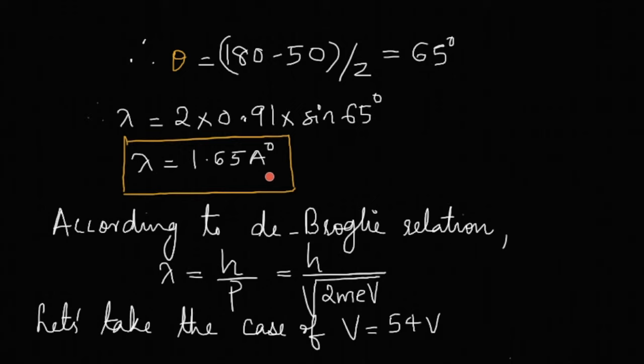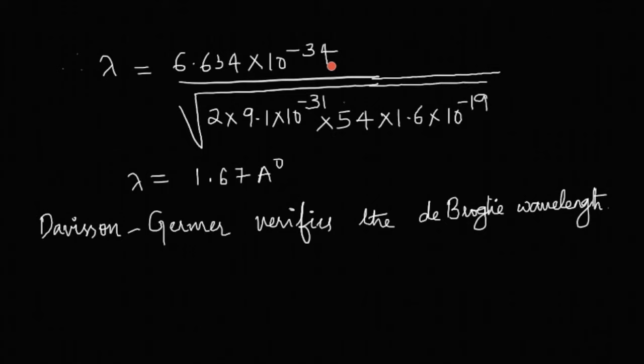Now, the same thing may be compared with de Broglie relation. De Broglie relation is lambda equals h by p, or h by root of 2mev. In this case, we have considered the bump at 54 volt, so v is 54 volt. Substituting this in the equation for lambda, we may solve that h is 6.634 into 10 power minus 34 divided by root of 2 into m mass of electron 9.1 into 10 power minus 31, ev. Voltage is 54 and e is 1.6 into 10 power minus 19. The answer is 1.67 angstrom.